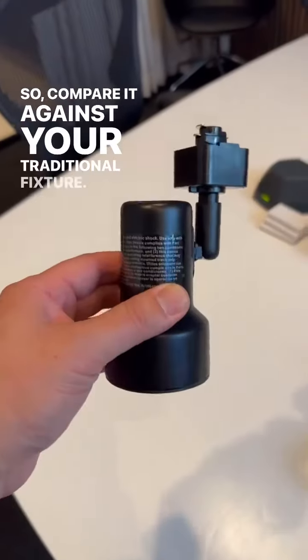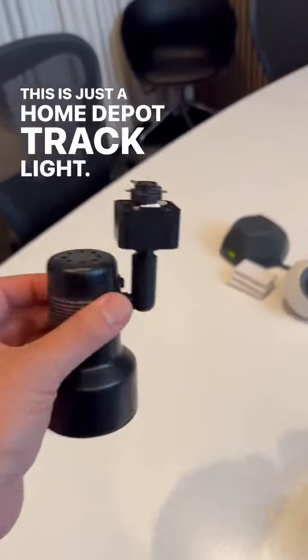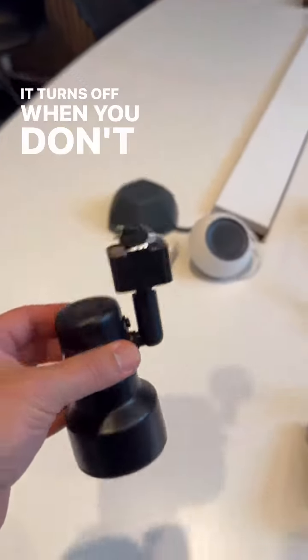Compare it against your traditional fixture. This is just a Home Depot track light. Of course, it turns on when you get power and turns off when you don't have power.